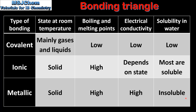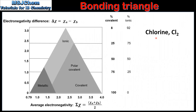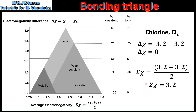Next we'll use the Bonding Triangle to determine the type of bonding in a substance. The first example is the bonding in Chlorine. Because Chlorine is composed of two of the same atom bonded together, the difference in Electronegativity is zero. The average Electronegativity is 3.2. Plotting zero on the Y axis and 3.2 on the X axis puts us firmly in the Covalent Bonding region — 100% Covalent Character and 0% Ionic Character. This is classified as a Non-Polar Covalent Bond.